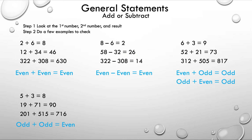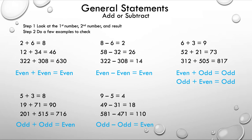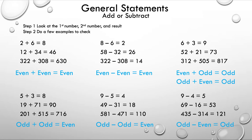Let's take a look at this next one: 9 minus 5 is 4, 49 minus 31 equals 18, and 591 minus 471 equals 110. With three different examples, you can come up with the statement: odd minus odd is equal to even. This is always the case and will always be true. Now the final addition and subtraction example: 9 minus 4 equals 5, 69 minus 16 equals 53, and 435 minus 214 equals 112 — so the general statement is odd minus even is equal to odd.